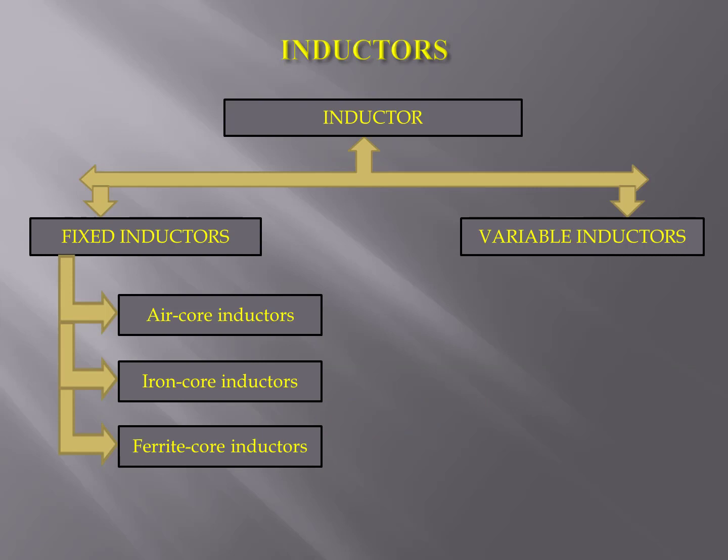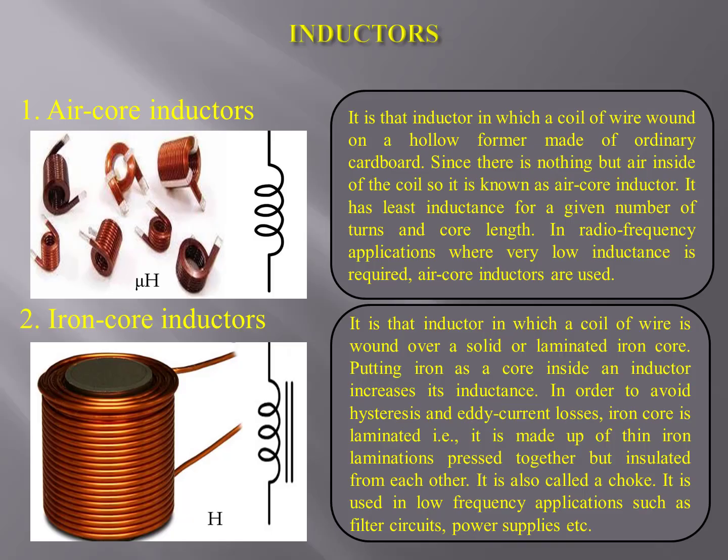You can see the classification of inductors on the screen. Inductors are broadly classified into two categories: fixed inductors and variable inductors. Types of fixed inductors are air core inductors, iron core inductors, and ferrite core inductors. Air core inductors — you can see various types of air core inductors and their symbol on the screen. It is that inductor in which a coil of wire is wound on a hollow former made of ordinary cardboard. Since there is nothing but air inside the coil, it is known as an air core inductor. It has least inductance for a given number of turns and core length. In radio frequency applications where very low inductance is required, air core inductors are used.